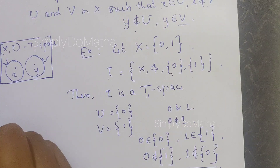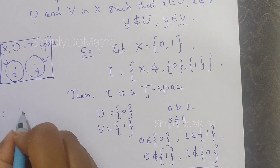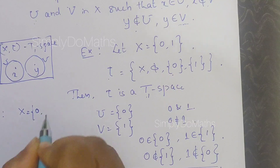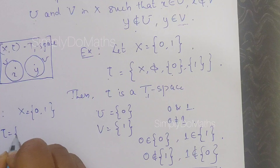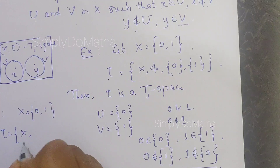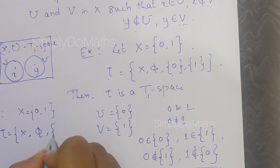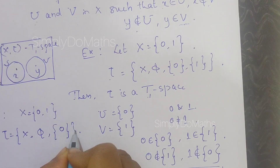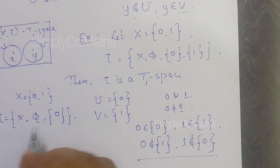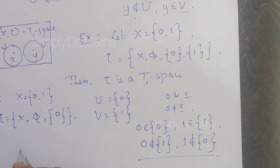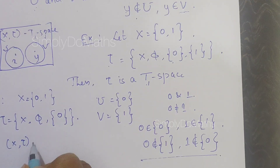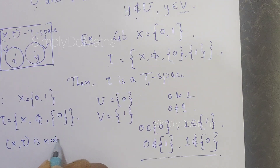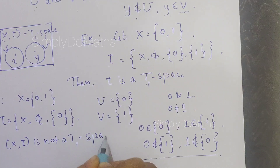For another example, consider X = {0, 1} again, but now define a topology τ on X containing only X, ∅, and {0} — note that the singleton set {1} is not included. You can confirm that (X, τ) is a topological space, but this (X, τ) is not a T1 space.